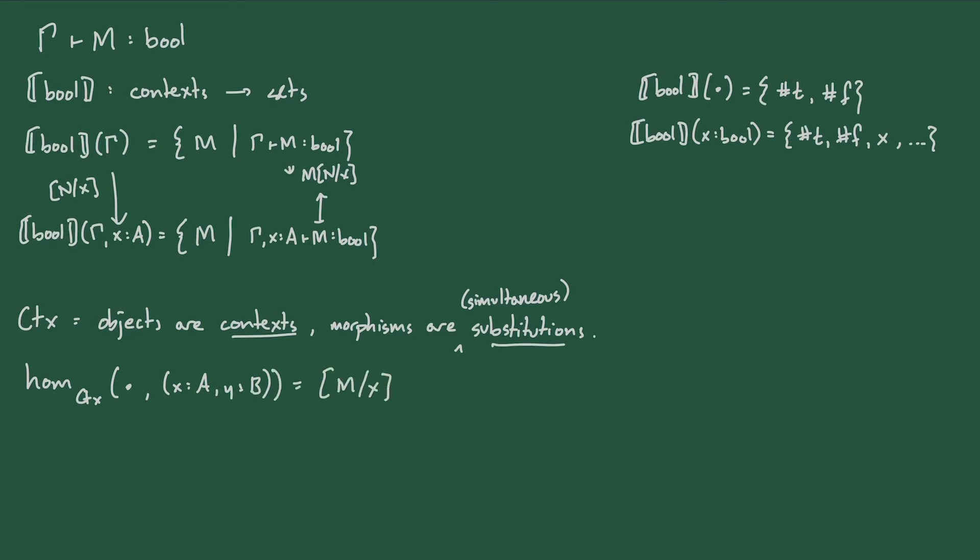This perspective on presheaves as sets with an action is very similar to the previous perspective of presheaves as just sets and functions, but I think there's a slightly different emphasis. Oftentimes a good way to understand a set is to understand group actions on it. To understand vector spaces, we can't get off the ground without scalar multiplication. We wouldn't have concepts like linear independence without it. And in type systems, as soon as we have things like function types, we can't understand the sets of well-typed terms without understanding the actions of substitution on them.